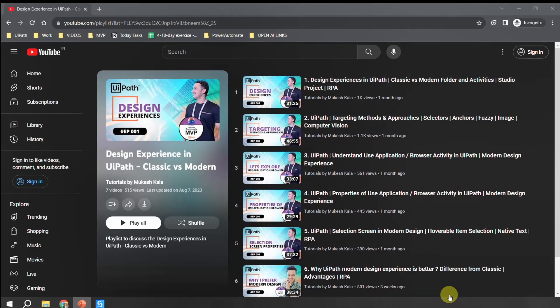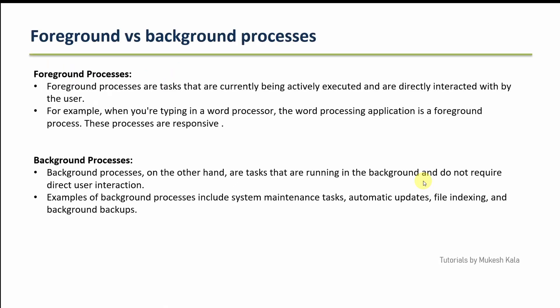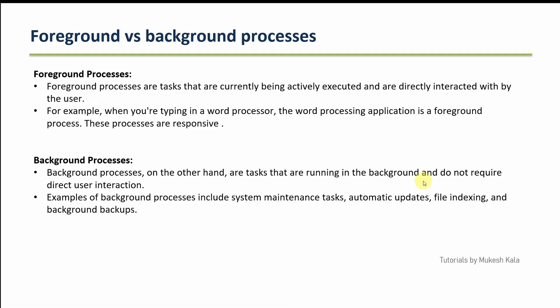Today we are going to discuss foreground and background processes. First, what is the difference? Foreground processes are the tasks that are currently actively executed and interacted with by the user. Whatever you see happening on the screen — the robot is performing and you can also give inputs — that is called a foreground process.